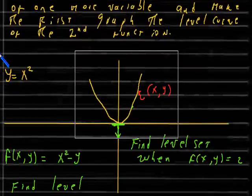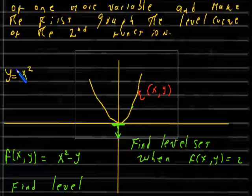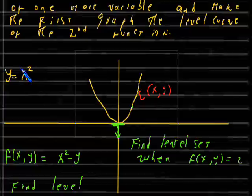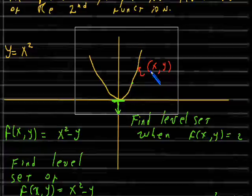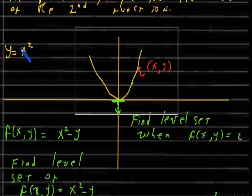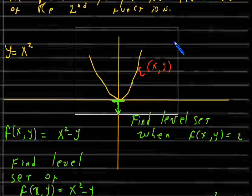We begin with the graph of the function g(x) = x², which we named informally as y = x². The graph of this function is this yellow line here. A point is on this graph if, when I plug in the value x and square it, I get the value for y. So that is the graph of the function y = x².